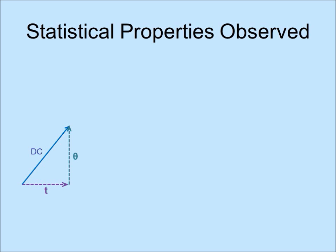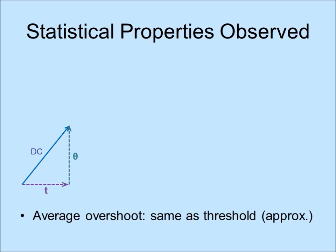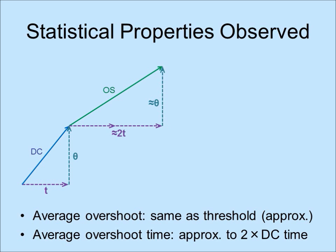Perhaps the most significant discovery in directional changes is in the scaling laws. Suppose we summarize price changes with a threshold theta. We observe that on average a directional change took T amount of time to complete. It was observed that a directional change of theta is followed by an overshoot of theta on average. Besides, the time it takes for an overshoot to complete is 2 times T on average. These observations were only available under directional change-based summaries.